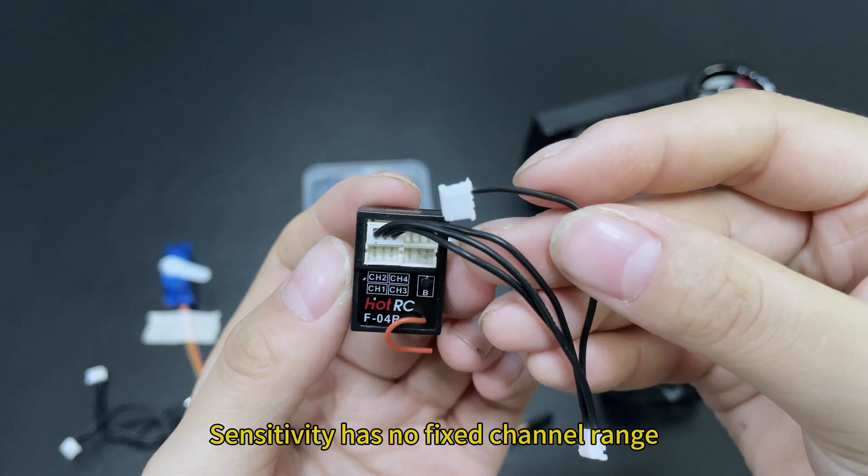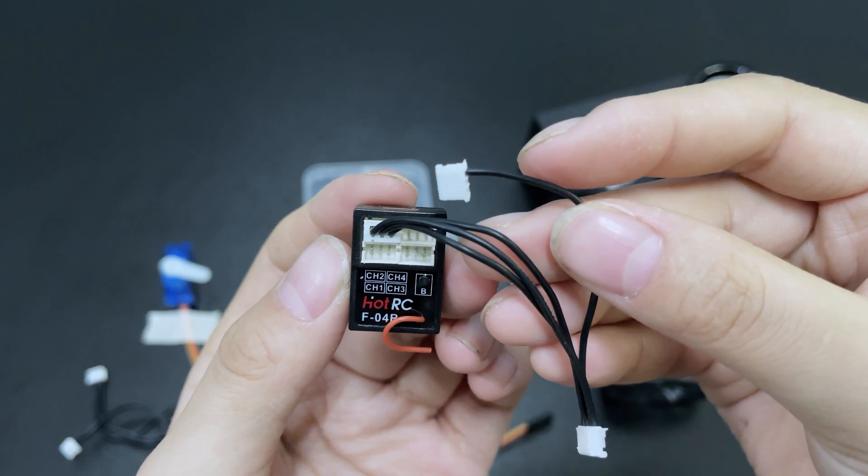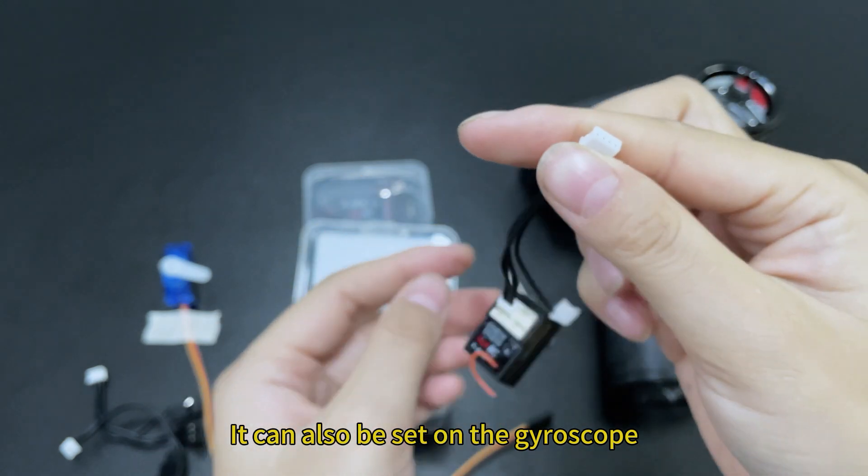This line is used to control the sensitivity. Sensitivity has no fixed channel range. I won't connect yet. Choose according to your needs. It can also be set on the gyroscope.